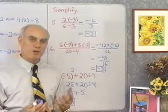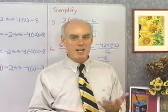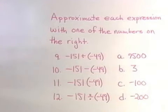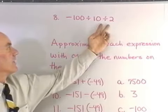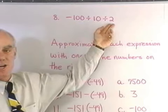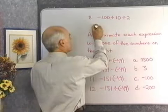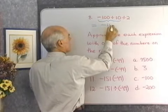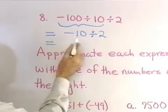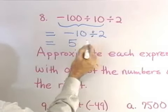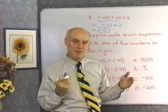We use the rule for order of operations with addition, subtraction, multiplication, and division. Now let's look at negative 100 divided by 10 divided by 2. I have all division, so I need to work from left to right. Negative 100 divided by 10 first: I divide absolute values to get 10, the two numbers have different signs, so the answer is negative 10. Then negative 10 divided by 2: I divide absolute values to get 5, the two numbers have different signs, so the answer is negative 5. When you have multiple divisions lined up without parentheses, work left to right.